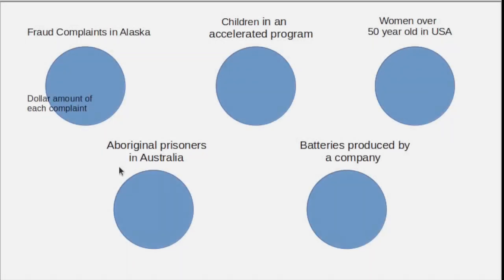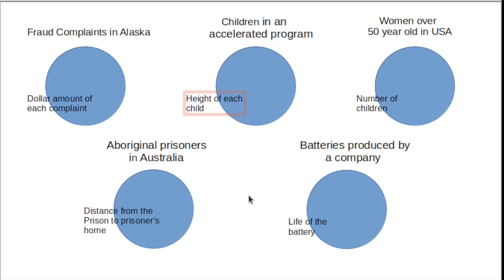Suppose that our variable of interest in the fraud complaints in Alaska was the dollar amount of each complaint. Then the average, the mean, of those dollar amounts would be a meaningful parameter. In the case of the children in the accelerated program, maybe we're interested in the height of each child. For the women over 50 years old in the United States, we might be interested in the number of children that they have.